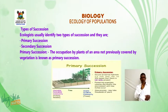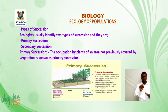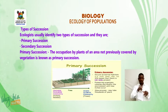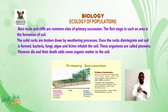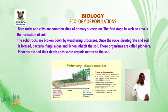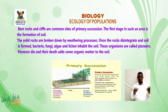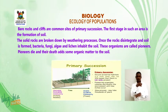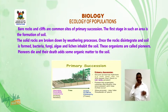Ecologists usually identify two types of succession: primary succession and secondary succession. Primary succession is the occupation by plants of an area not previously covered by vegetation. Bare rocks and cleavages are common sites of primary succession. The first stage in such an area is the formation of soil — solid rocks are broken down by weathering processes. Once the rocks disintegrate and soil is formed, bacteria, fungi, algae, and lichen inhabit the soil; these organisms are called pioneers.